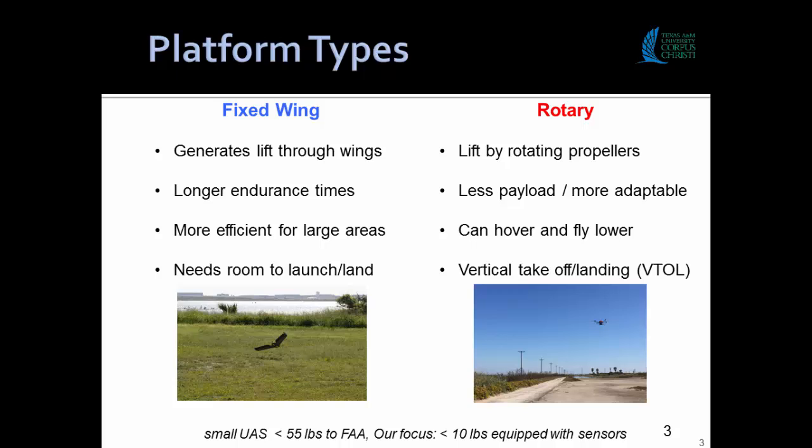The downside of fixed wing is you need room to launch and land. Rotary craft are just like helicopters with propellers. Generally they can't carry as much for a given endurance, however they're typically more adaptable — they can handle higher winds, are more stable, you can hover, and you can fly lower. Vertical takeoff and landing, or VTOL, is a big advantage. These lines are getting blurred because the technology is progressing so fast.